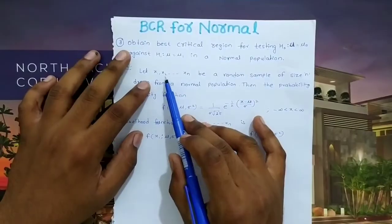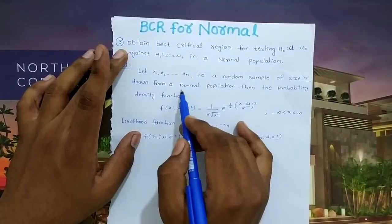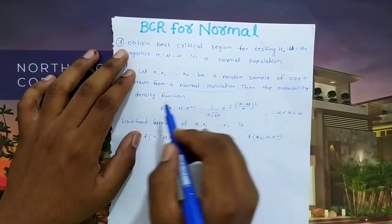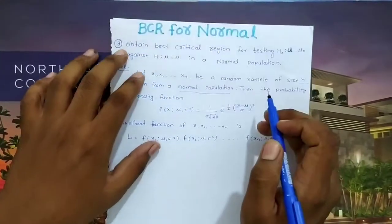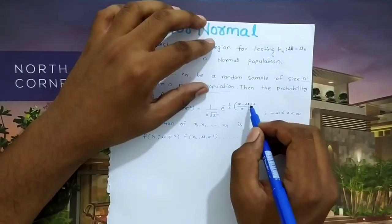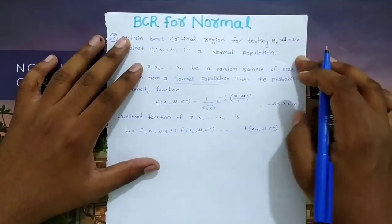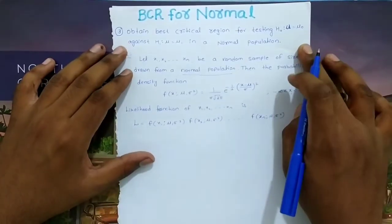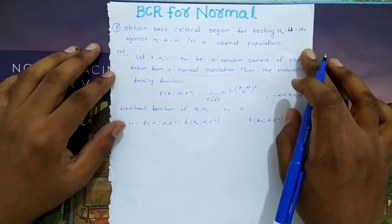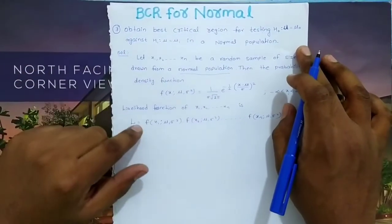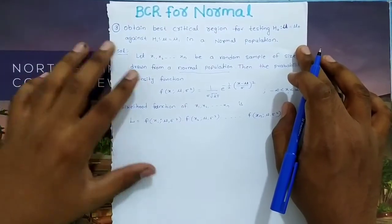Solution. Let x1, x2, ..., xn be a random sample of size n drawn from a normal population. The probability density function is (1/σ√(2π)) × e^(−((x−μ)/σ)²), where x lies between minus infinity to plus infinity. Now we consider the likelihood function of the sample observations x1, x2, ..., xn: L equals the product of all probability density functions.